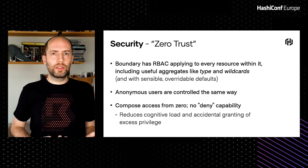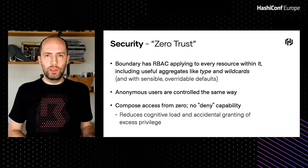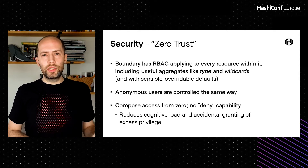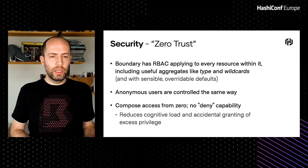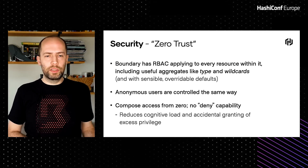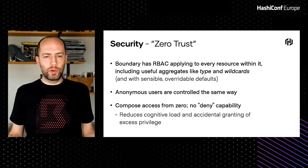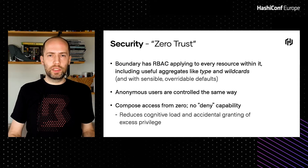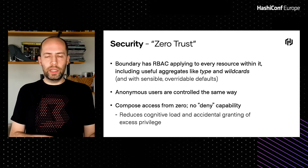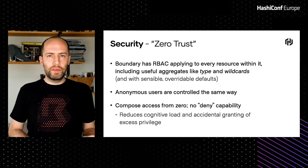For zero trust, Boundary has role-based access controls that apply to every resource within it. We also have useful aggregates like type and wildcards, and anonymous users are controlled the same way — you can apply RBAC to an anonymous user that doesn't have authentication right now. One principle we took is to compose access explicitly from zero — real zero trust. There's no deny capability, so you can't grant permissions and then remove them later. We found this reduces cognitive load and makes it much easier to figure out the final set of permissions, preventing accidental granting of excess privilege.